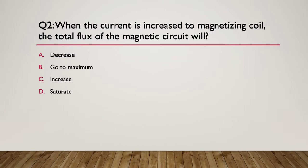Question 2: when the current is increased to a magnetizing coil, the total flux of the magnetic circuit will do what? A: decrease, B: go to maximum, C: increase, D: saturate. The hint is the formula H equals N·I divided by L. The best correct answer is C — increase. It could eventually saturate, but we can't confirm that, so 'increase' is the best answer.